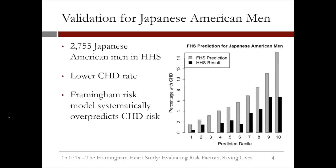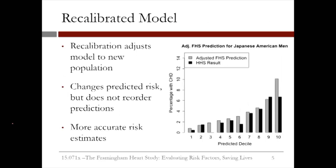For the HHS study with Japanese American men, the Framingham model systematically over-predicts the risk of CHD. The model can be recalibrated for this population by scaling down the predictions. This changes the predicted risk, but not the order of the predictions. The higher risk patients still have higher predictions than the lower risk patients, allowing the model to have more accurate risk estimates for populations not included in the original group of patients.